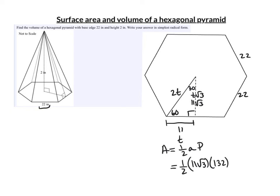132 times a half is 66 times 11 is 726. So the area of the hexagon is 726 root 3.